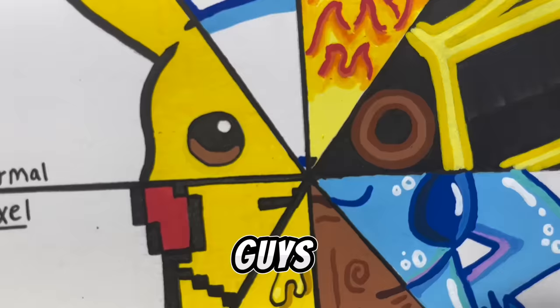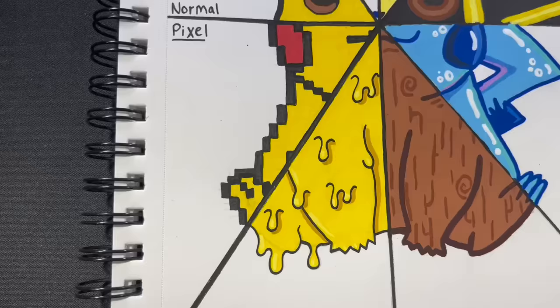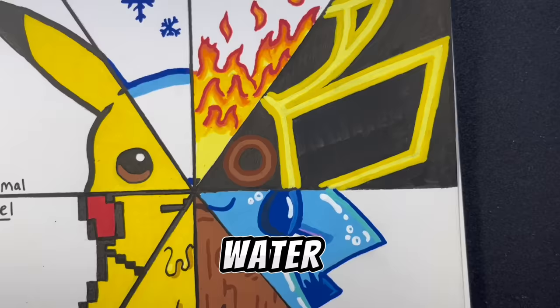All right guys, this is done. We have completed this drawing of Pikachu in eight different art styles. First off, we got pixel, then drip, wood, water, neon, fire, ice, and normal. That concludes today's video.